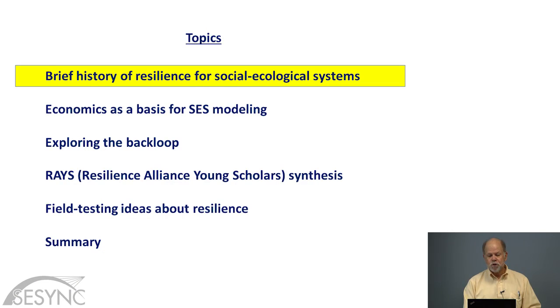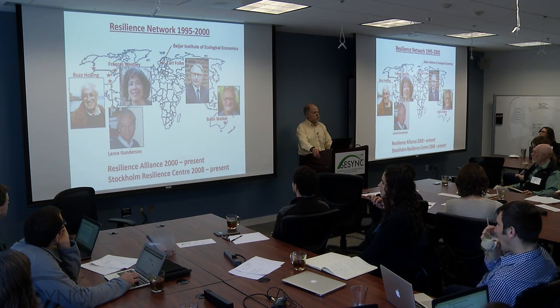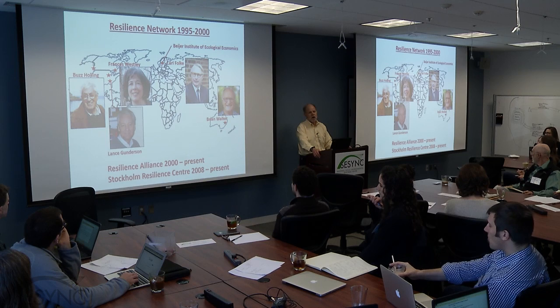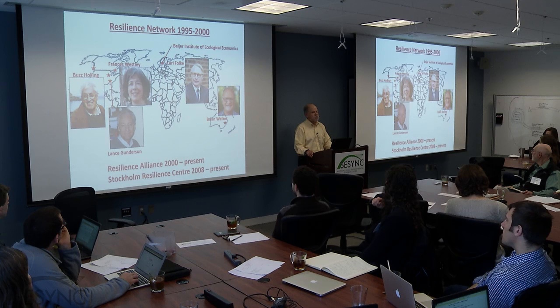And then close with a few comments about field testing ideas, which I will continue tomorrow. So first, a brief history of resilience. In the mid-90s, Buzz Holling, who actually developed many of the ideas about resilience in a seminal 1986 paper, organized a group called the Resilience Network, which was an interdisciplinary group of about 20 people that he brought together for a series of meetings to think about concepts of change in social ecological systems.